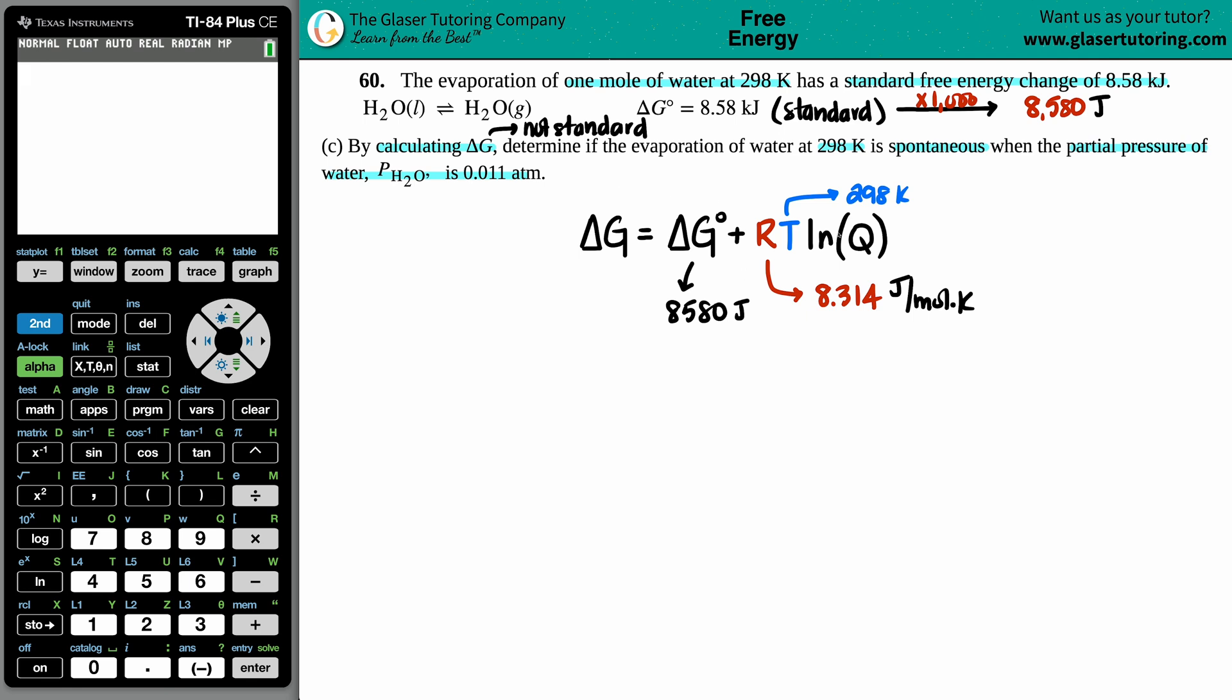Now the only thing that's left is this Q value. ln is the natural log on the calculator so I don't have to worry about that, but I have to find out what the Q is. Keep in mind that a Q value...